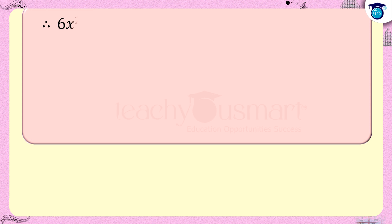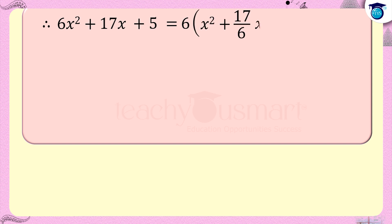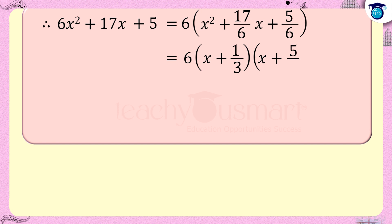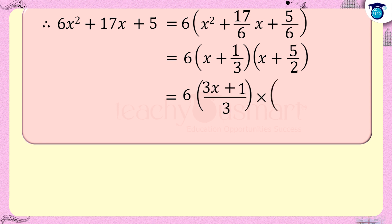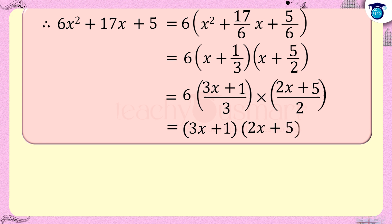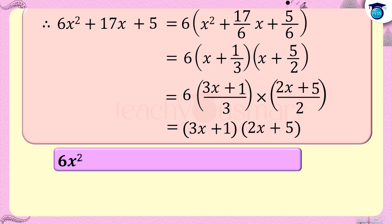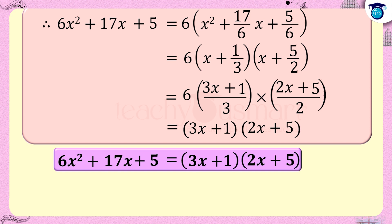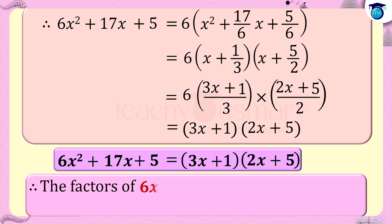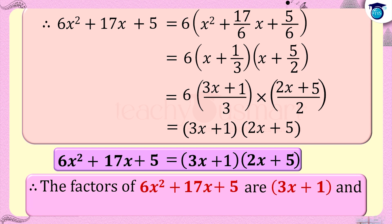Therefore 6x squared plus 17x plus 5 equals 6 multiplied by (x squared plus 17/6 x plus 5/6), which equals 6 multiplied by (x plus 1/3) multiplied by (x plus 5/2). This gives 6x squared plus 17x plus 5 equals (3x plus 1) multiplied by (2x plus 5). Therefore the factors of 6x squared plus 17x plus 5 are (3x plus 1) and (2x plus 5).